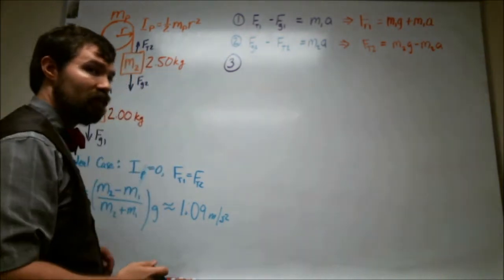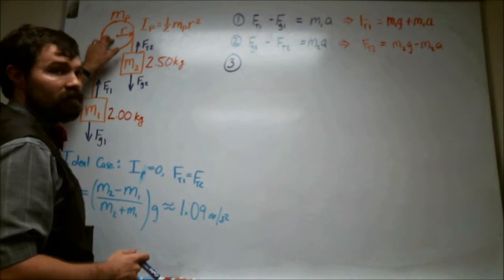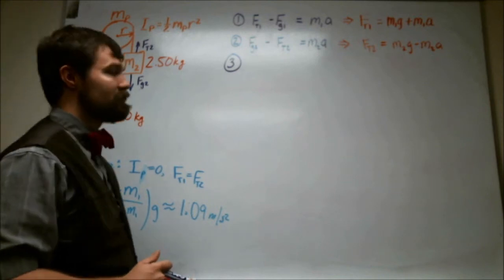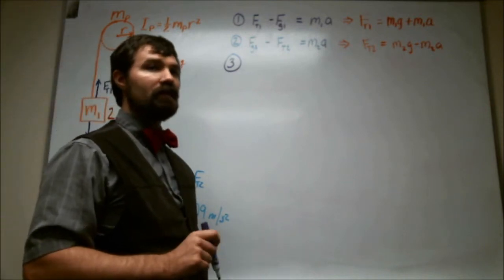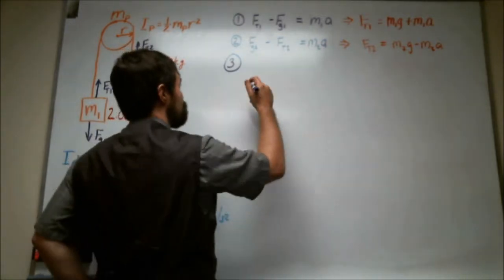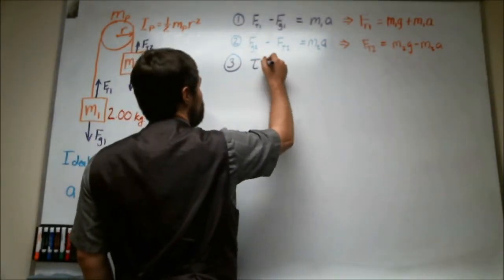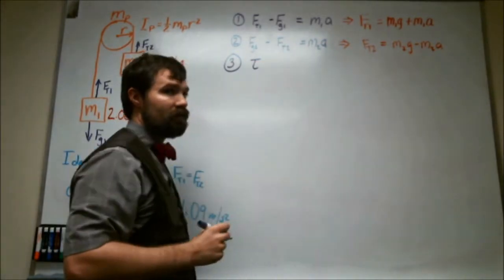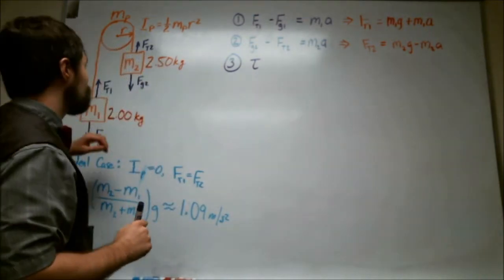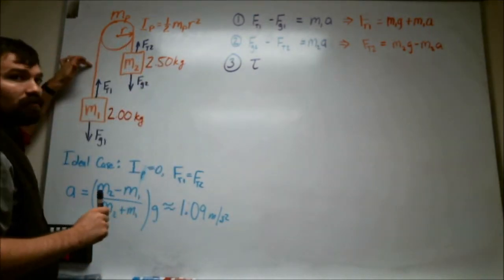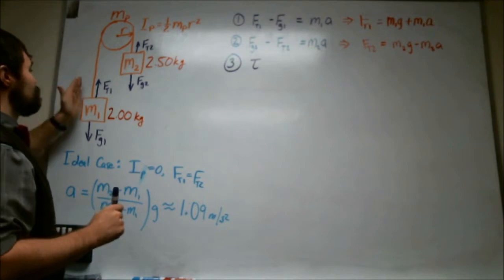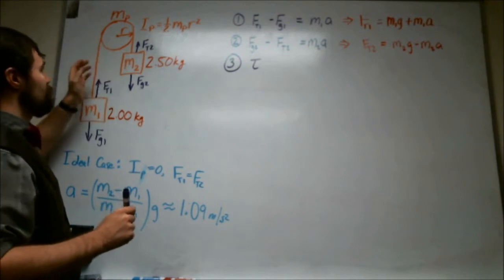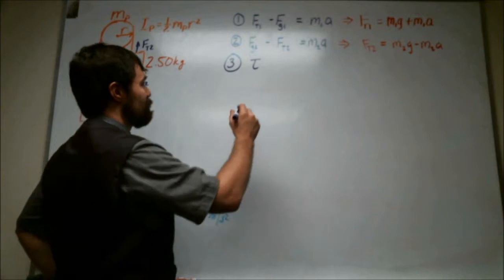And that equation number three basically says, now let's consider what happens to the pulley itself. So the pulley has some torque upon it from each of these two strings. On one side it's being torqued in a counterclockwise direction and on the other it's being torqued in a clockwise direction.